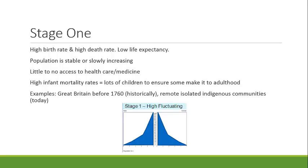Along with high infant mortality, there's also a high risk of women dying during childbirth. So we can see how these two things are going on at once — women are incentivized to have many children to ensure enough will survive into adulthood, but that also puts them at greater risk. The more children they have, the more chances they have to die during childbirth, which was a lot more common in the past than it is today.